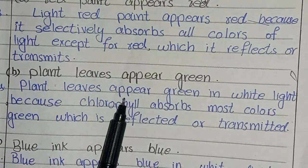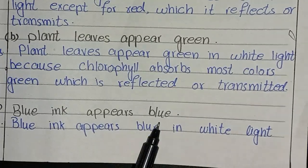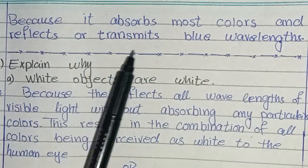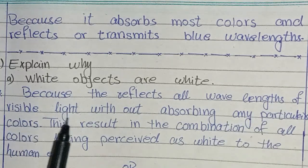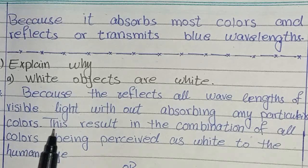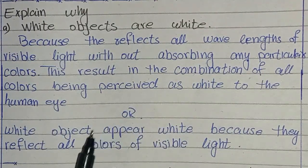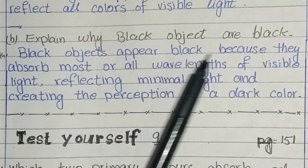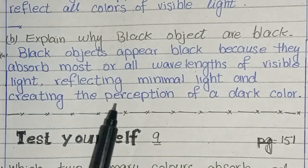Plant leaves appear green in white light because chlorophyll absorbs most colors and reflects green. Blue ink appears blue in white light because it absorbs most colors and reflects or transmits blue wavelengths. Explain why white objects are white: because they reflect all wavelengths of visible light without absorbing any particular colors, resulting in all colors being perceived as white to the human eye. Explain why black objects are black: black objects absorb most or all wavelengths of visible light, reflecting minimal light and creating the perception of a dark color.